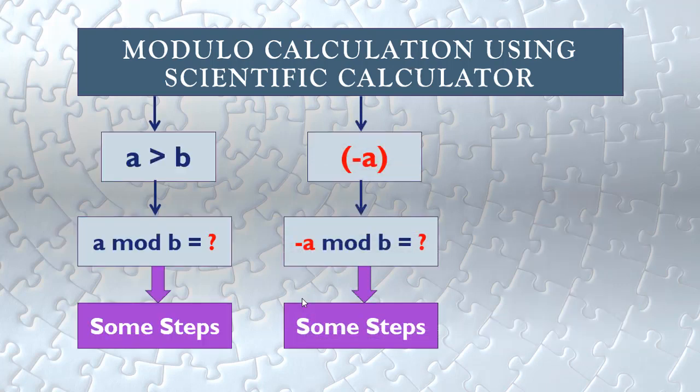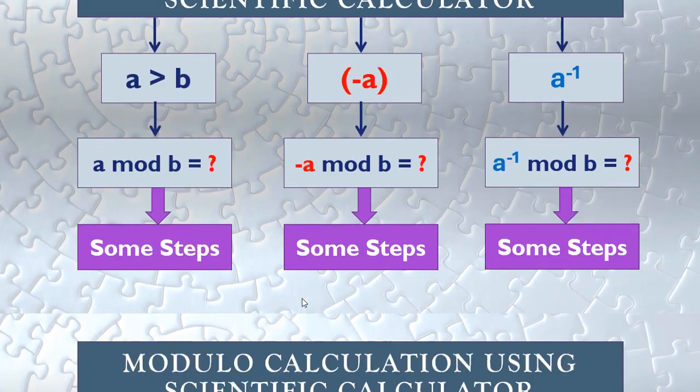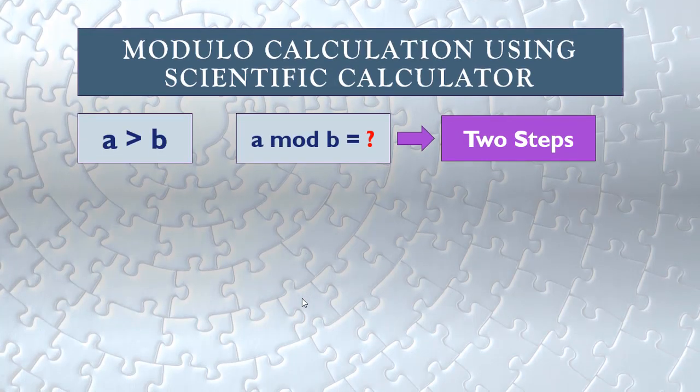We also have additional cases. If we have a negative a, how do we calculate negative a mod b? And also, if we have a multiplicative inverse, a mod b — how do we calculate it on our calculator?